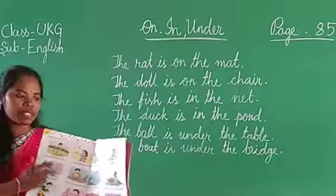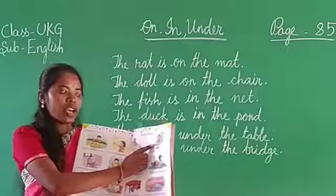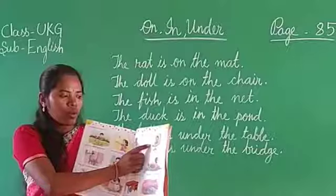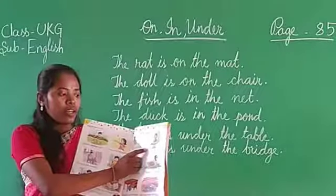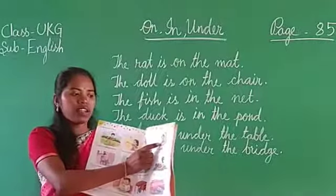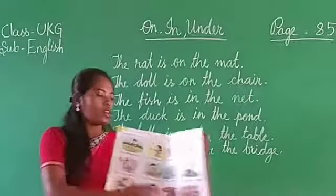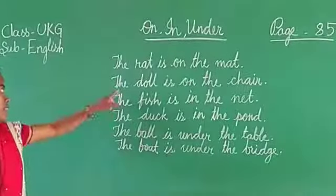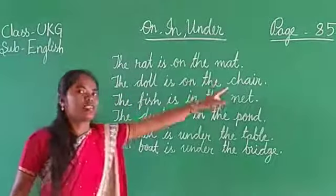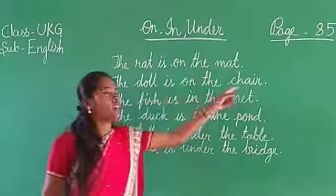Let's take another example. What do you see here? This is a chair and this is a doll. Where is the doll kept? The doll is on the chair. So let's read this sentence: the doll is on the chair. Please repeat: the doll is on the chair.